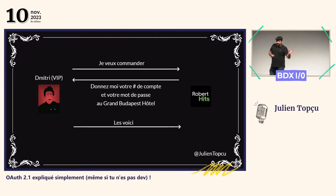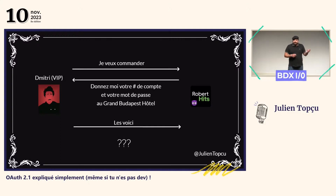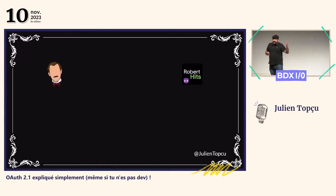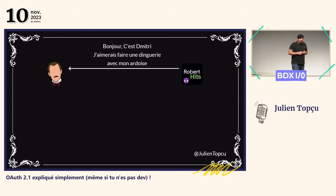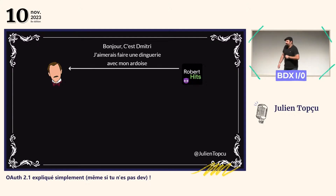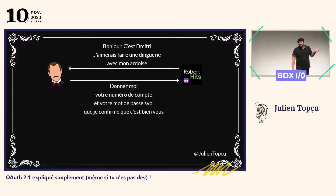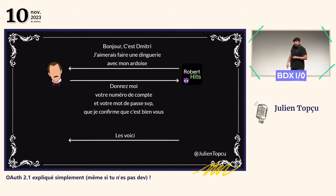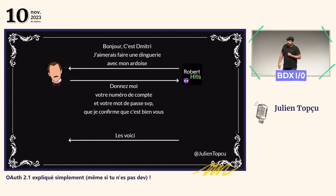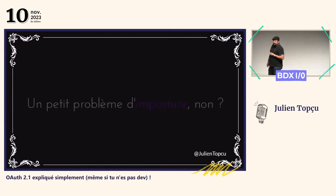Malheureusement, ce jour-là chez Robert Ritz, Dimitri est tombé sur un employé malveillant. Ce qu'a fait cet employé malveillant, c'est qu'il est allé appeler Gustave, le manager de l'hôtel, en se faisant passer pour Dimitri, en disant : « Je vais faire une grosse commande. » Gustave a dit : « D'abord, je veux m'assurer que c'est bien toi. Est-ce que tu peux me donner ton numéro de compte et ton mot de passe ? » L'employé malveillant venait de les voler à Dimitri, il les donne à Gustave, et Gustave se fait avoir. Il n'a aucun moyen de vérifier que ce n'était pas réellement Dimitri au bout du téléphone. À chaque fois que vous donnez votre mot de passe à quelqu'un, vous risquez un problème d'imposture et d'usurpation d'identité.